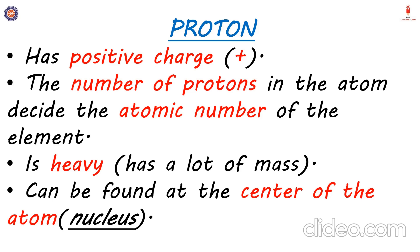The next property is that the number of protons in the atom decides the atomic number of the element. The atomic number is the number which decides what element it will be — the atomic number of each element is different. For example, the number of protons in gold is different from the number of protons in silver, and that is what makes these two different elements different, because the protons in themselves are not different.